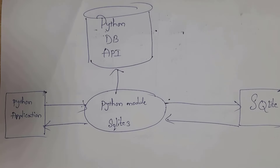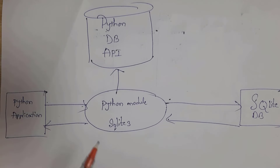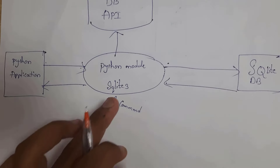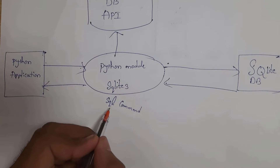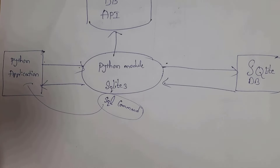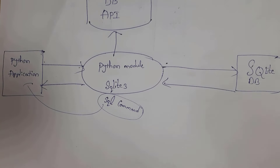This is the diagram of Database API. In order to establish communication between a Python application and a database, we need one Database API. In Python, we need to import the SQLite3 module. This SQLite3 module acts as an interface between Python and the database. Whenever you import the SQLite3 module, you can write SQL commands inside Python — that means we are creating a database and performing various operations on it in Python itself.